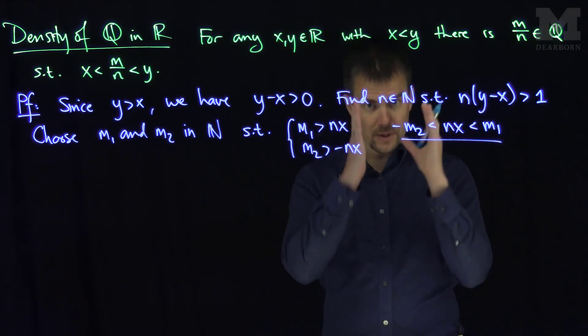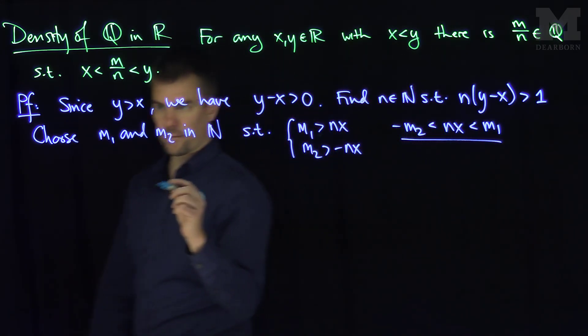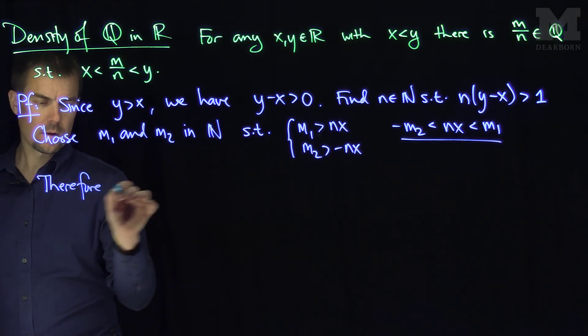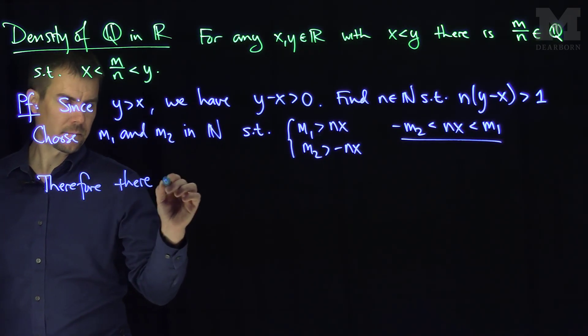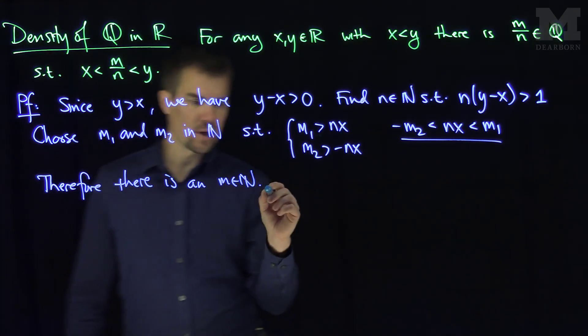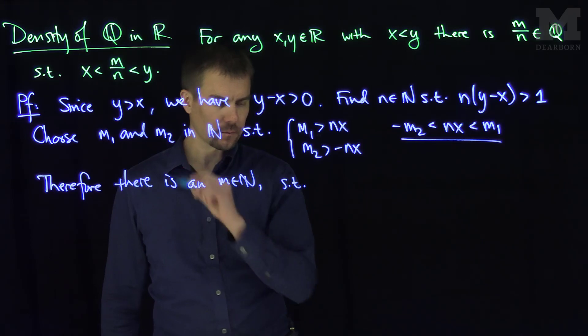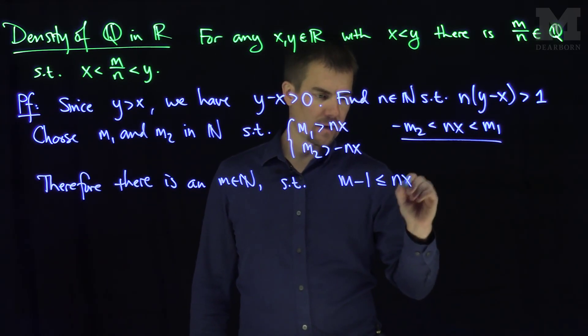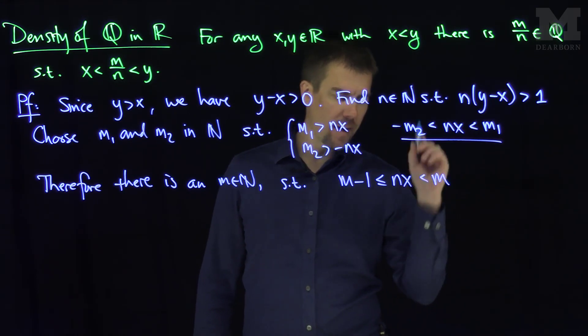And so there's a smallest, there's one that is exactly between that range, so therefore there is an m such that m minus one is less than or equal to nx is less than m.